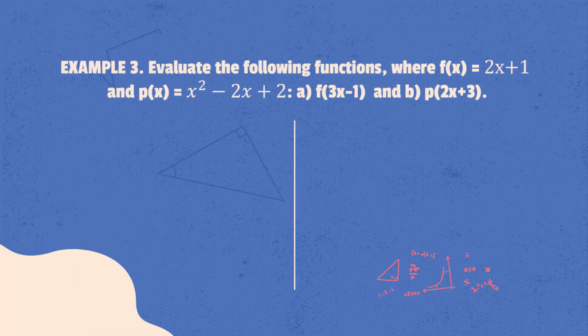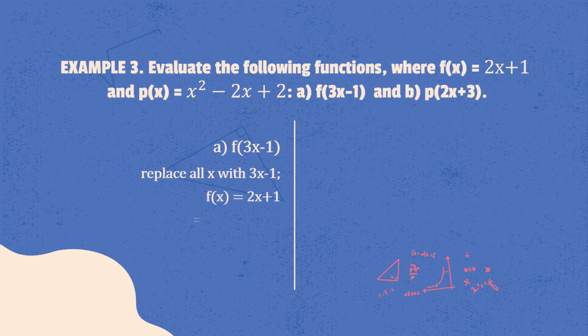Let's have another example. Evaluate the following functions where f of x is equal to 2x plus 1, and p of x is equal to x squared minus 2x plus 2. Solve for: a) f of x where x is equal to 3x minus 1. Replace all x with 3x minus 1 in f of x. Distribute 2 to 3x minus 1, then add similar terms. The final answer is 6x minus 1.